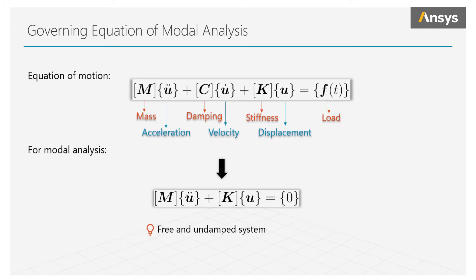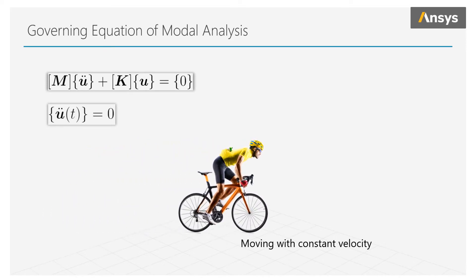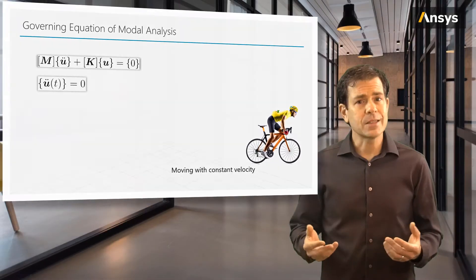Looking at the equation of motion in this modified form, if we view it as a time domain dynamics problem, it basically describes a structure sitting somewhere without any motion, or with constant velocity, which is essentially zero acceleration. In the time domain, it is not all that meaningful to solve it with zero loading.